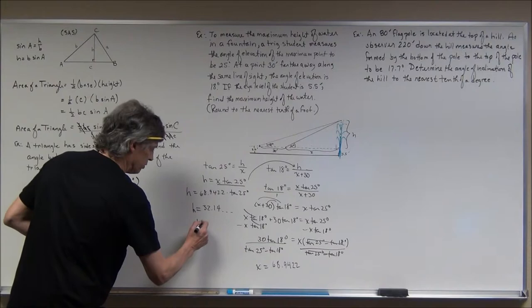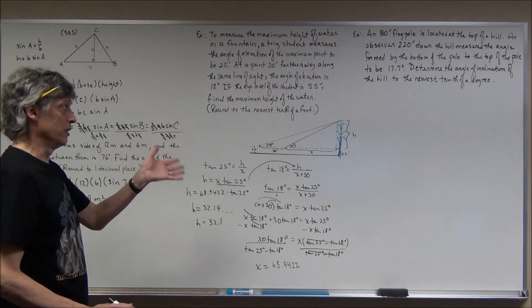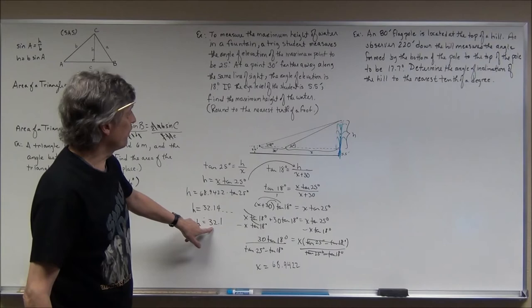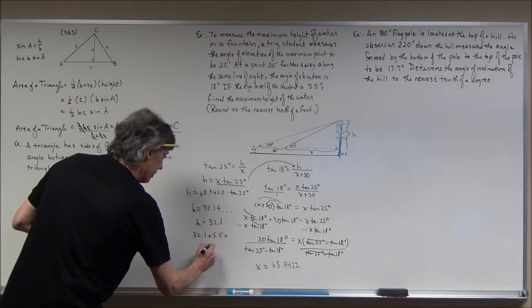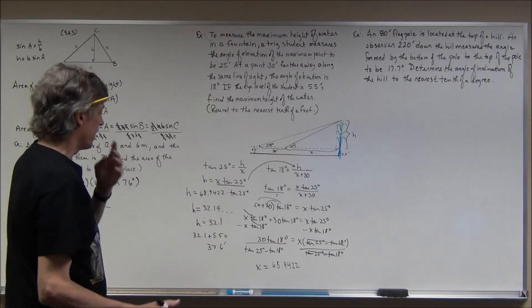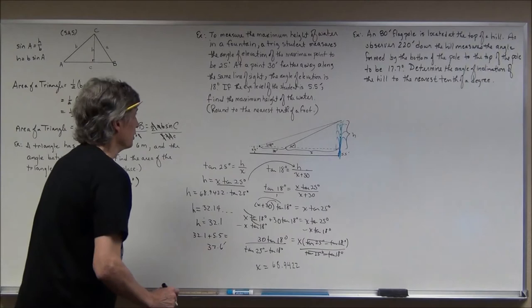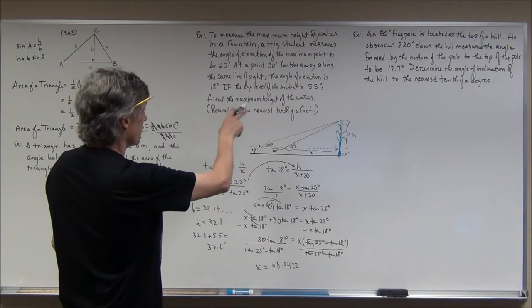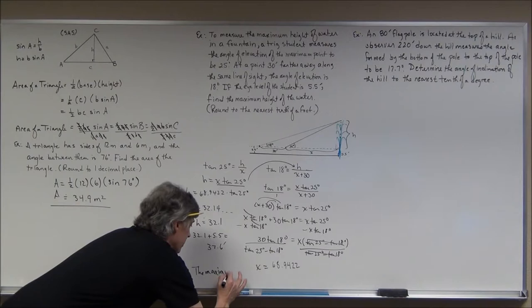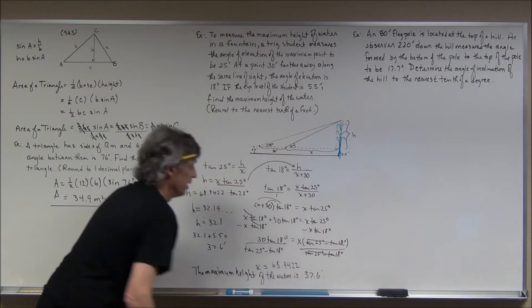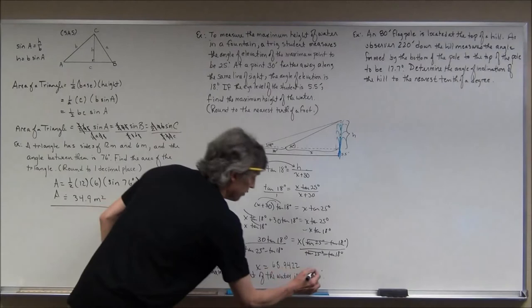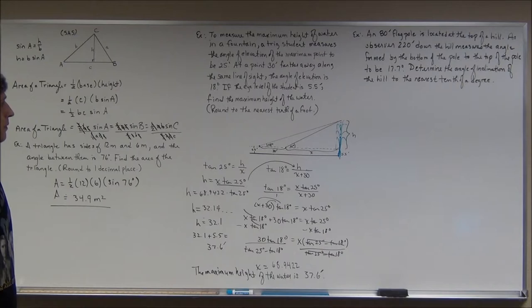So H ≈ 32.1 feet, but I'm not done — I need to add the eye level of 5.5 feet: 32.1 + 5.5 = 37.6 feet. The maximum height of the water fountain is 37.6 feet. For story problems, always write out your answer in a sentence and include your units.